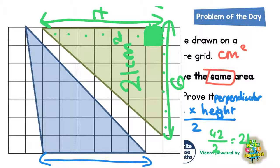If we count along the bottom of the blue triangle: one, two, three, four, five, six — so the base of the blue triangle is also six centimeters.